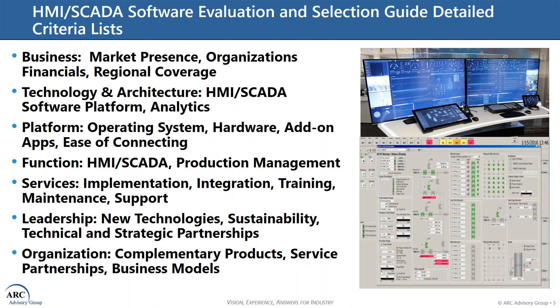Technology and architecture criteria includes defining HMI SCADA Software platform features and how they support various functionality such as analytics. Platform specification criteria includes defining operating system and hardware platform requirements, what add-on apps are available such as MES and historians, and the ease of connecting to other platforms such as ERP. Functional criteria includes, for example, which HMI and production management capabilities are converged.